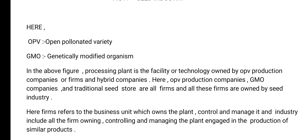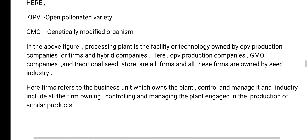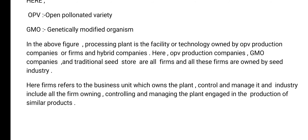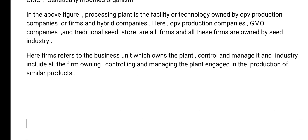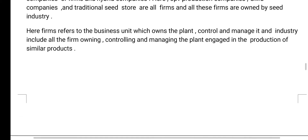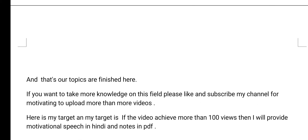OPV production companies, GMO companies, and the traditional seed store are all firms, and all these firms are owned by seed industries. Here, firms refer to the business unit which owns, controls, and manages the plant. Industries include all the firms owning, controlling, and managing the plant, engaged in the production of similar products. That concludes our topics.